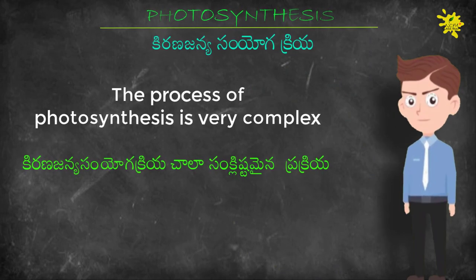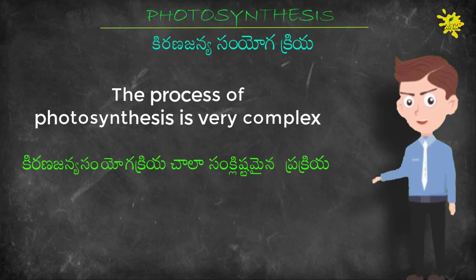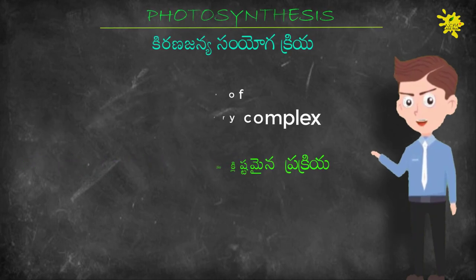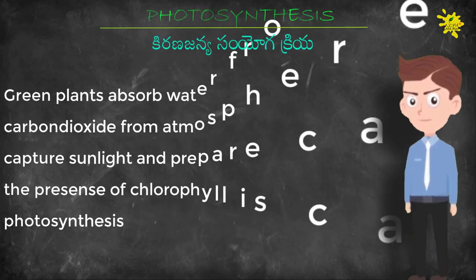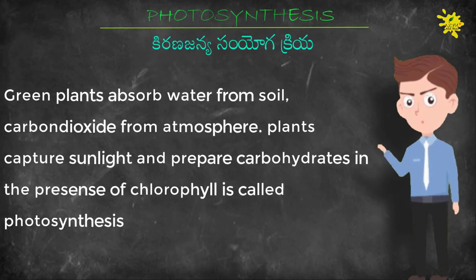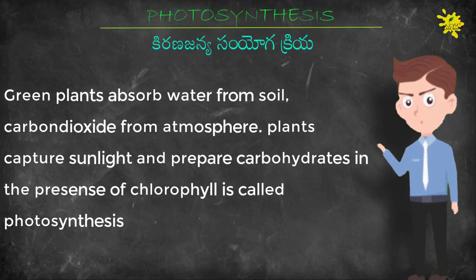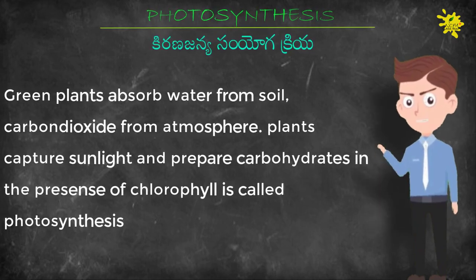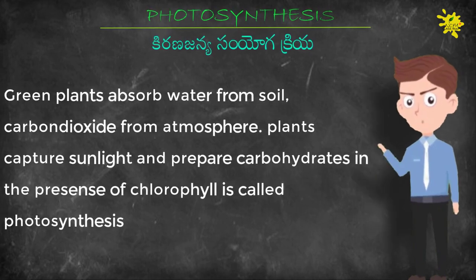Now let us know what is photosynthesis. The process of photosynthesis is very complex. Green plants absorb water from the soil and carbon dioxide from the atmosphere. These plants capture sunlight and prepare carbohydrates in the presence of chlorophyll. This process is called photosynthesis.